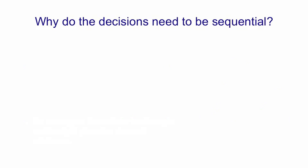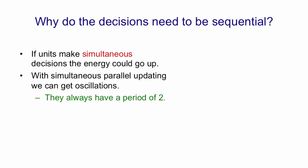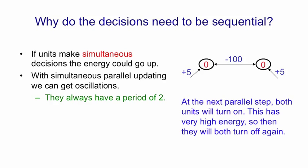So if you ask why do the decisions need to be sequential in a Hopfield net? The problem is that if units make simultaneous decisions, they could each think they were reducing the energy, but actually the energy could go up. With simultaneous parallel updating, we can get oscillations, which always have a period of two. So here's a little network where the units have biases of plus five, and a weight between them of minus 100. So when both units are off, the next parallel step, if we update them both at the same time, will turn both units on, because they each think they can improve things via the bias term. But as soon as you do that, you get this minus 100, and so you've actually made things much worse. So then at the next parallel step, both units will turn off again.